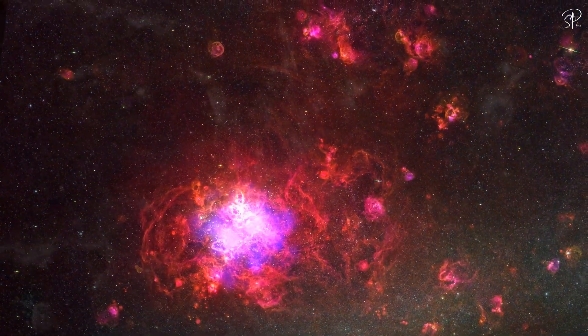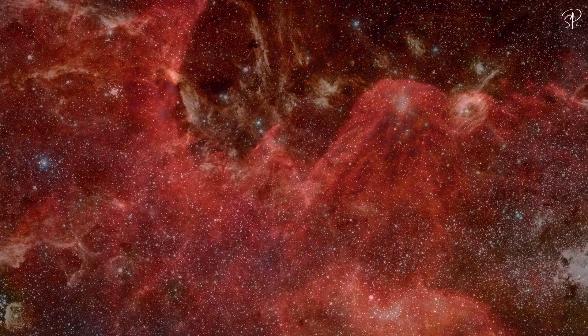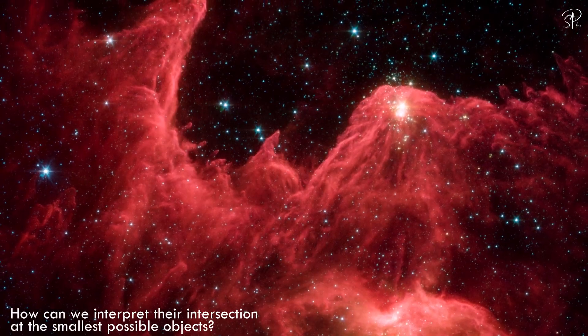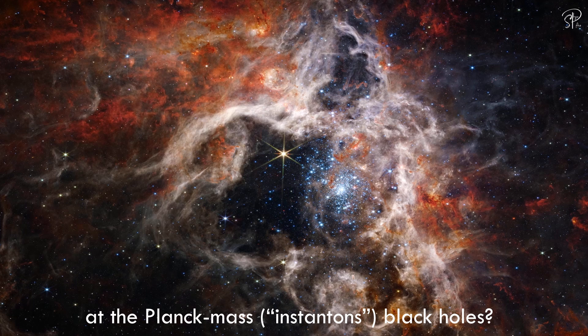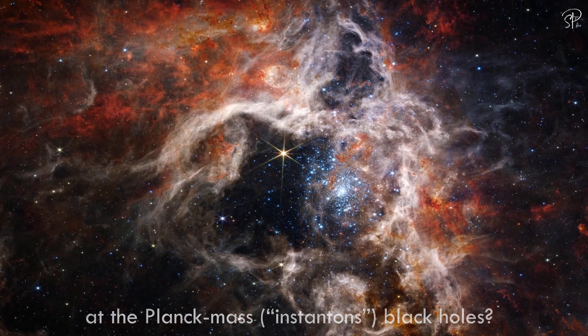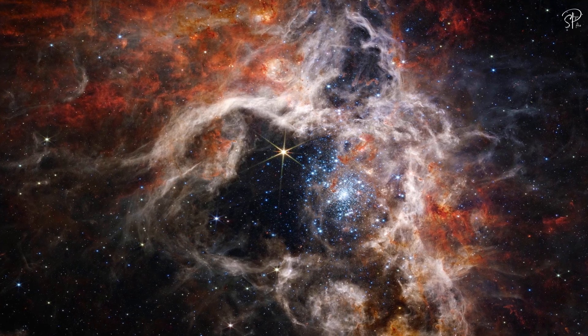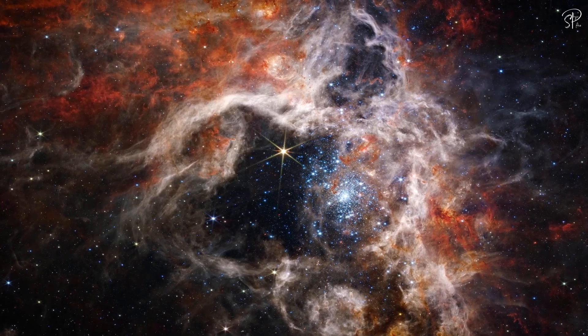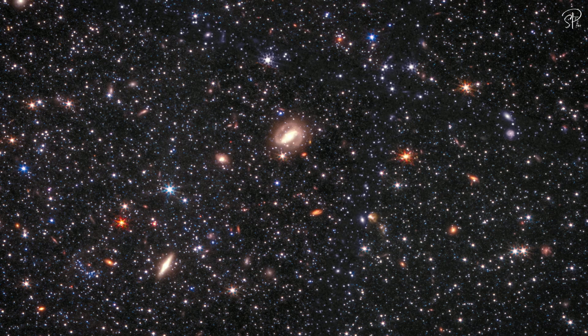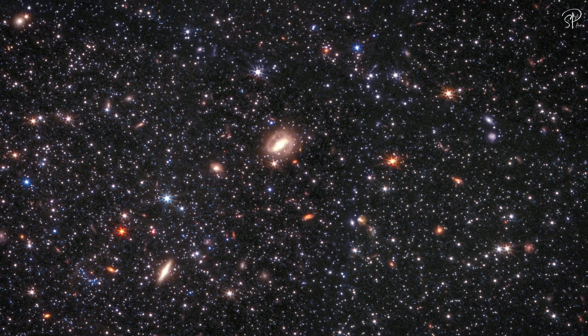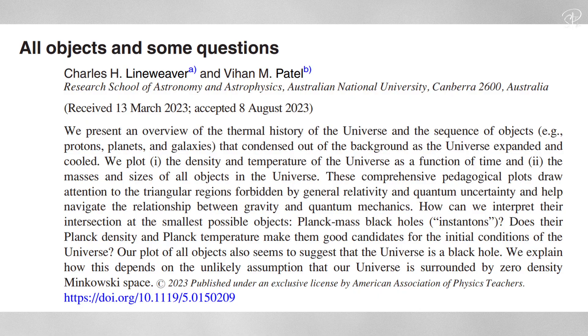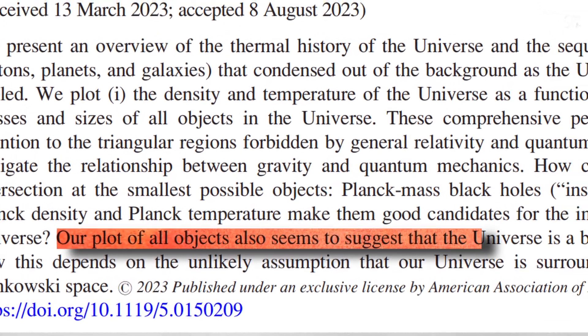The main question that they are trying to answer is, how can we interpret their intersection at the smallest possible objects, Planck mass black holes? Does their Planck density and Planck temperature make them good candidates for the initial condition of the universe? Well, seems like their plot of all objects seems to suggest that the universe is in fact a black hole.